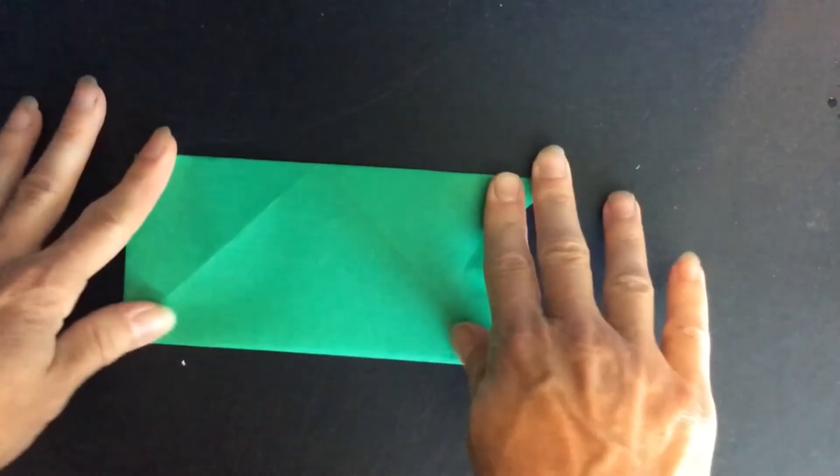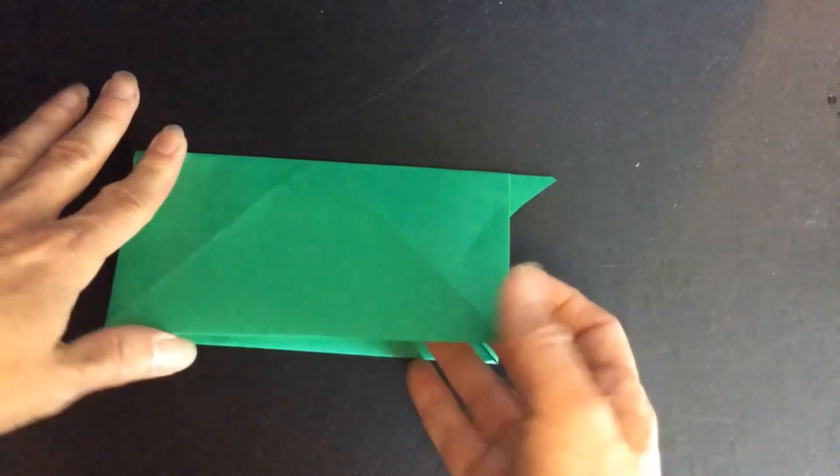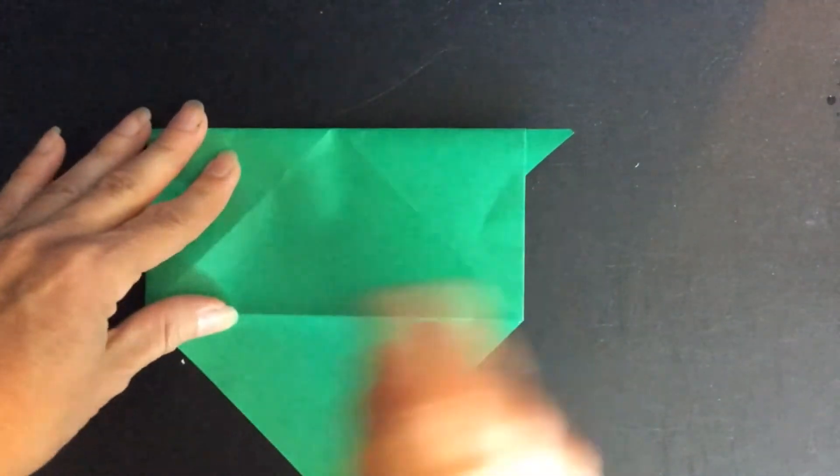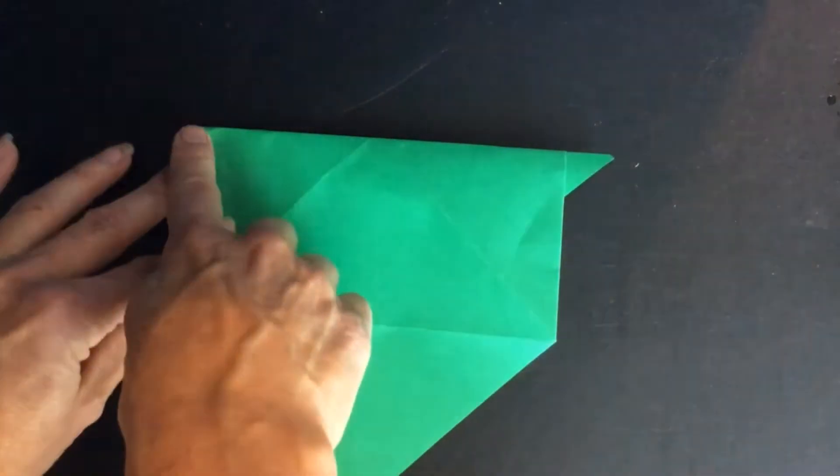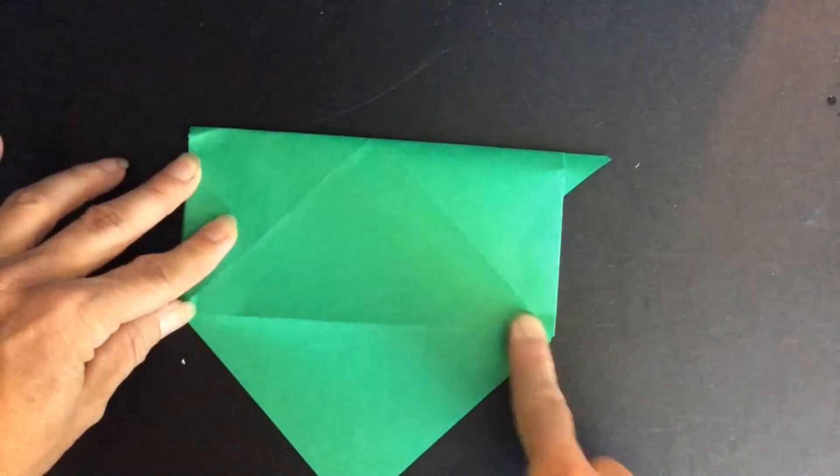Like this. And now I'm going to unfold this triangle. Unfold the paper from here to here.